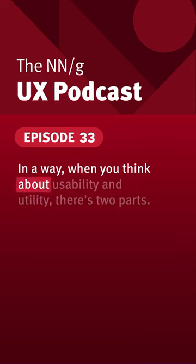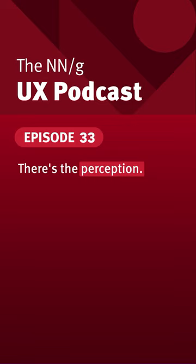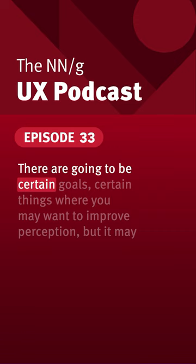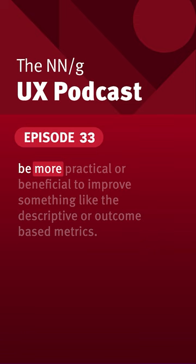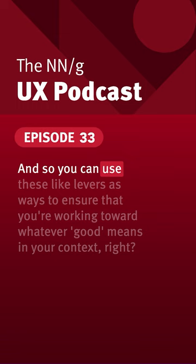When you think about usability and utility, there's two parts. There's the perception — how useful is it? Is it something that people want to use? That's one thing. Do I want to pay taxes? No, but I have to. So you kind of have to counterbalance. There are going to be certain goals where you may want to improve perception, but it may be more practical or beneficial to improve something like the descriptive or outcome-based metrics. You can use these levers as ways to ensure that you're working toward whatever 'good' means in your context.